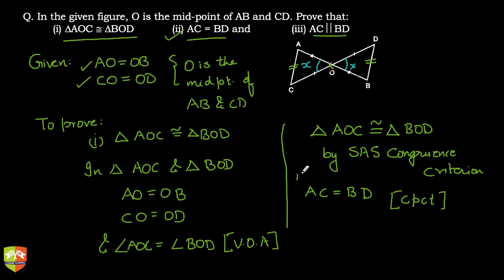And the third one, they are asking to prove AC to be parallel to BD, and indeed it is. Why? Because if you see this angle is Y, so this angle also is Y because of alternate interior angles.